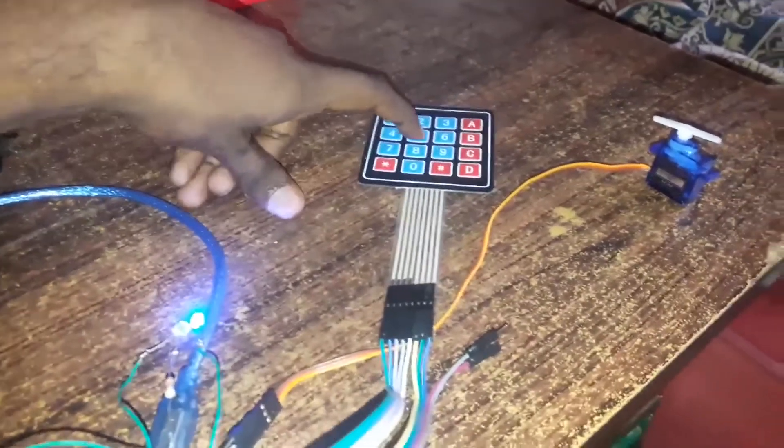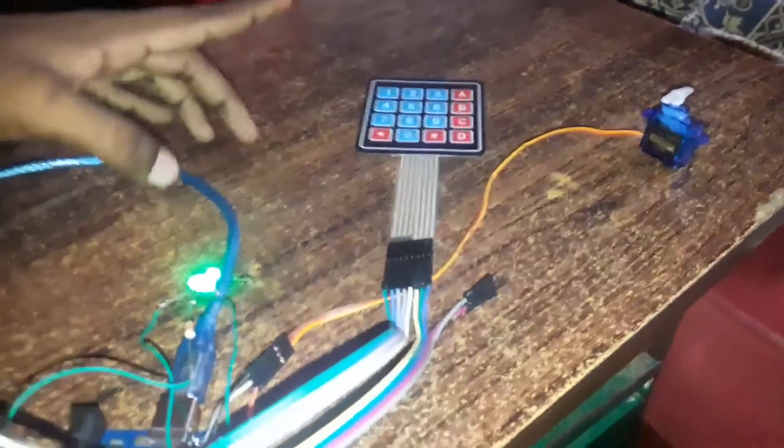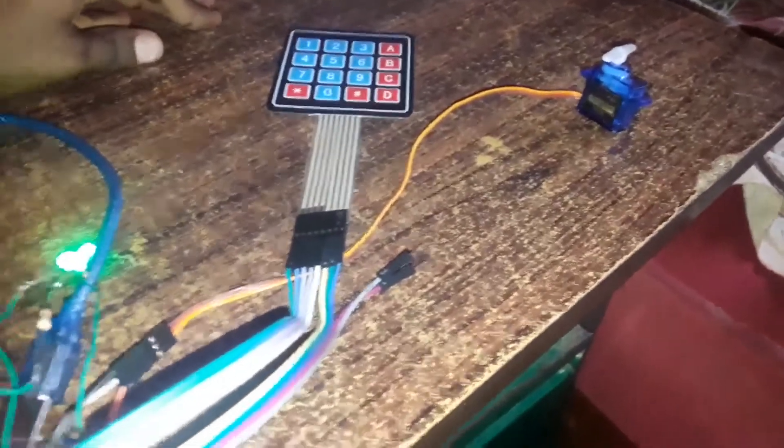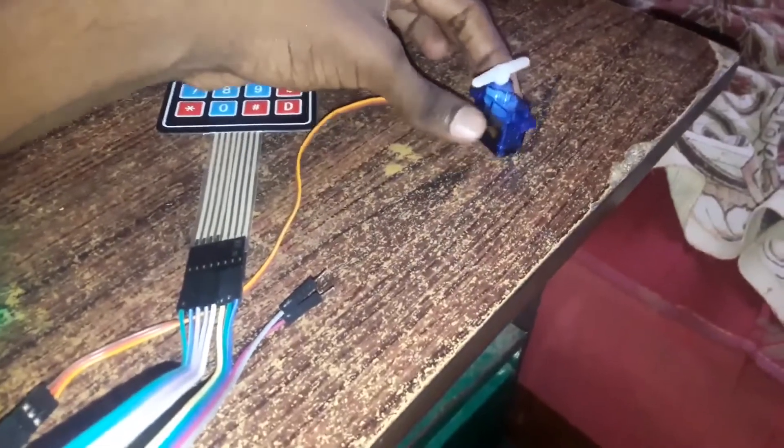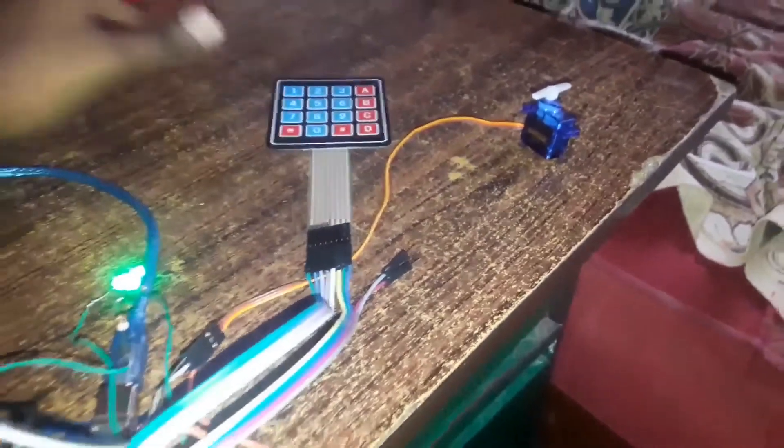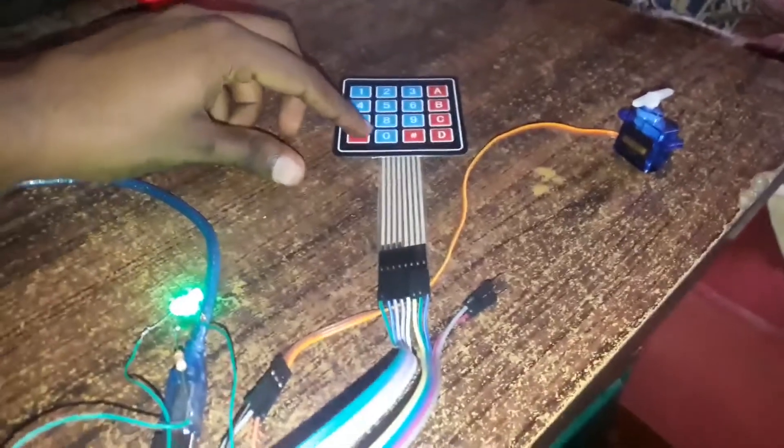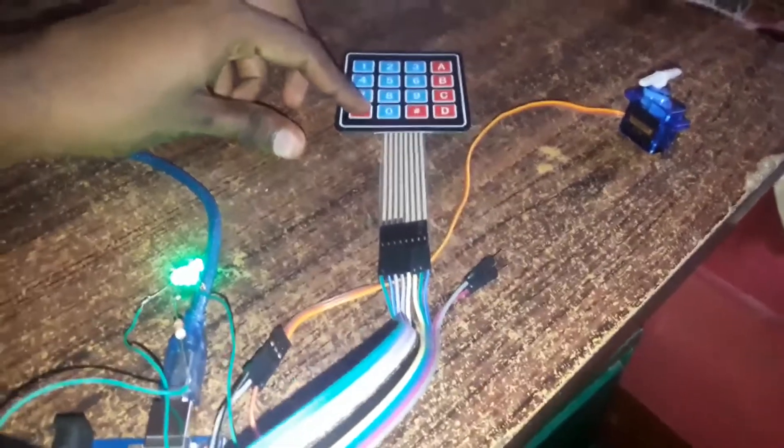Let's type the correct password. 159. Green light glows and the servo rotates. By attaching the servo motor to the door lock, we can use this keypad to the door and by entering the correct password, we can open the door.